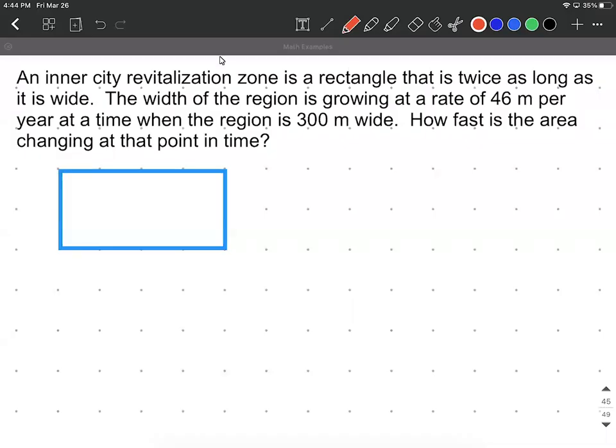Okay, on this problem, we have an inner city revitalization zone that is a rectangle that is twice as long as it is wide. The width of the region is growing at a rate of 46 meters per year at a time when the region is 300 meters wide.